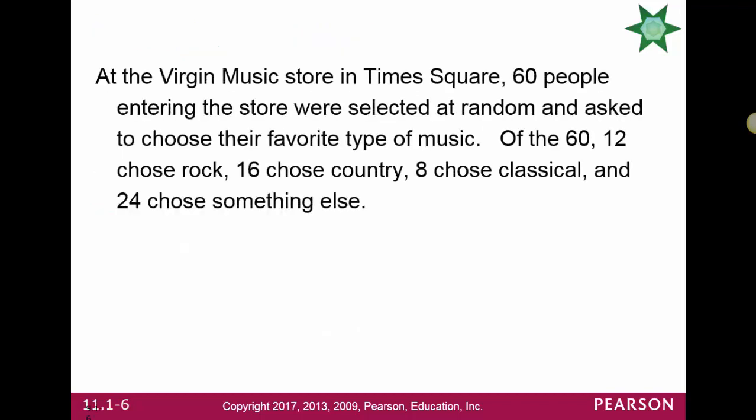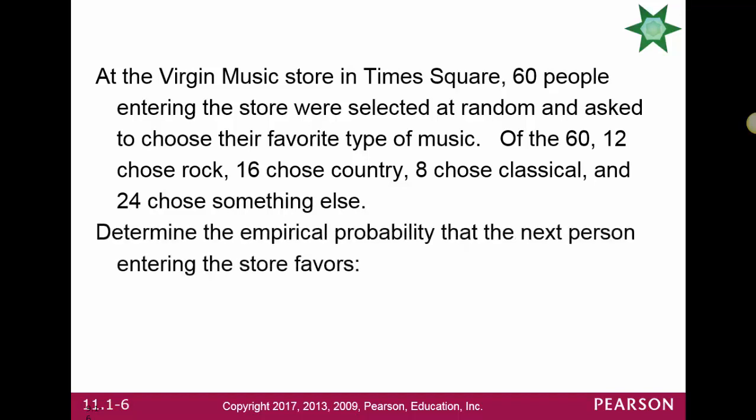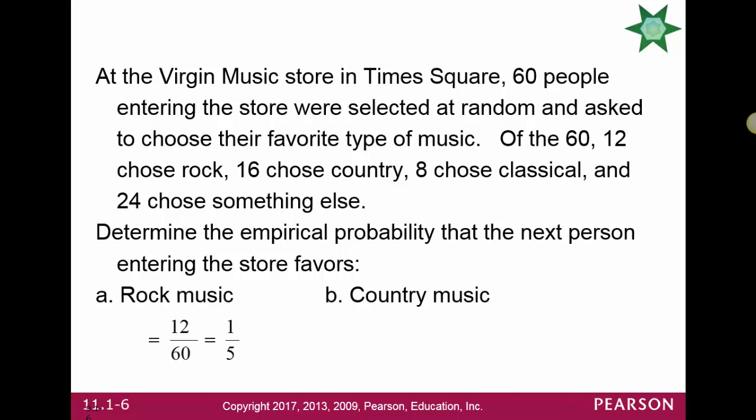At the Virgin Music Store in Times Square, 60 people entering the store were selected at random and asked to choose their favorite type of music. Of the 60, 12 picked rock, 16 country, 8 classical, and 24 chose something else. The empirical probability the next person entering the store favors rock music would be 12 out of 60, or 1 out of 5. Country would be 16 out of 60, or 4 out of 15.